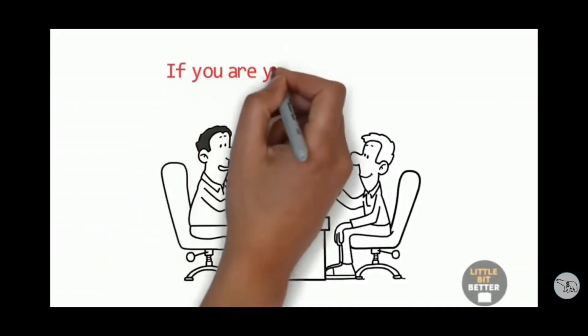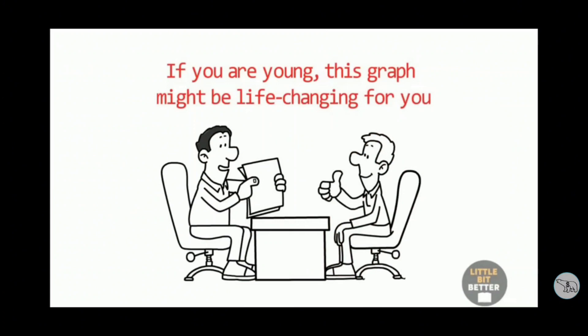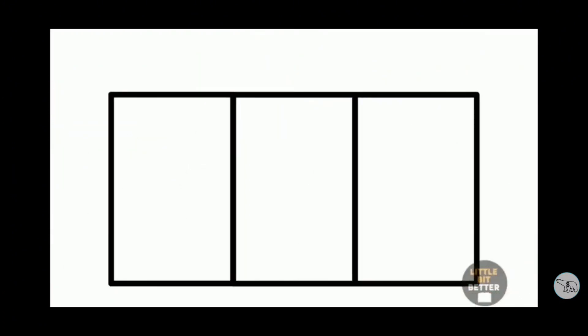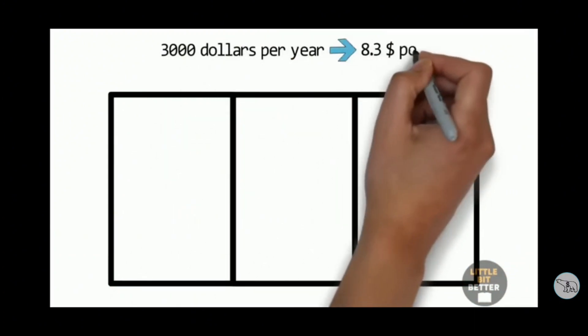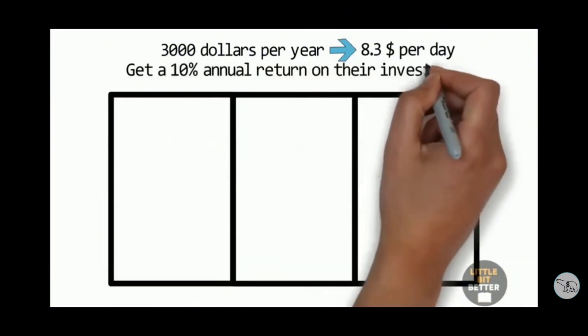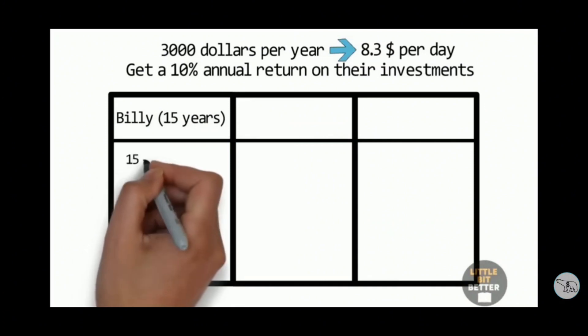And I'm going to show you a video right now that explains this even better. If you are young, this graph might be life-changing for you. In the graph, you see three people: Billy, Susan, and Kim. All three invest $3,000 per year, which is roughly $8.3 per day, and all three get a 10% annual return on their investments.